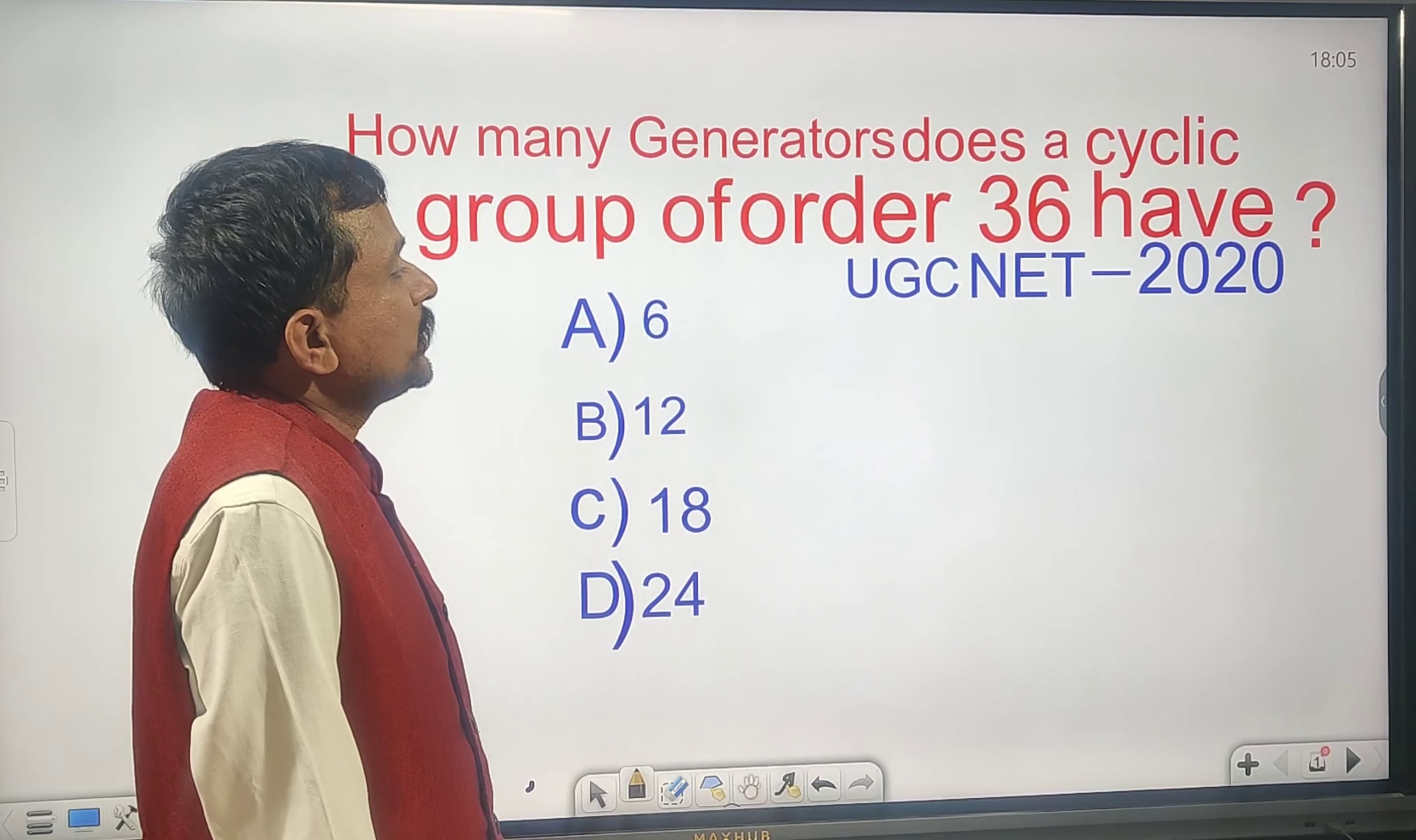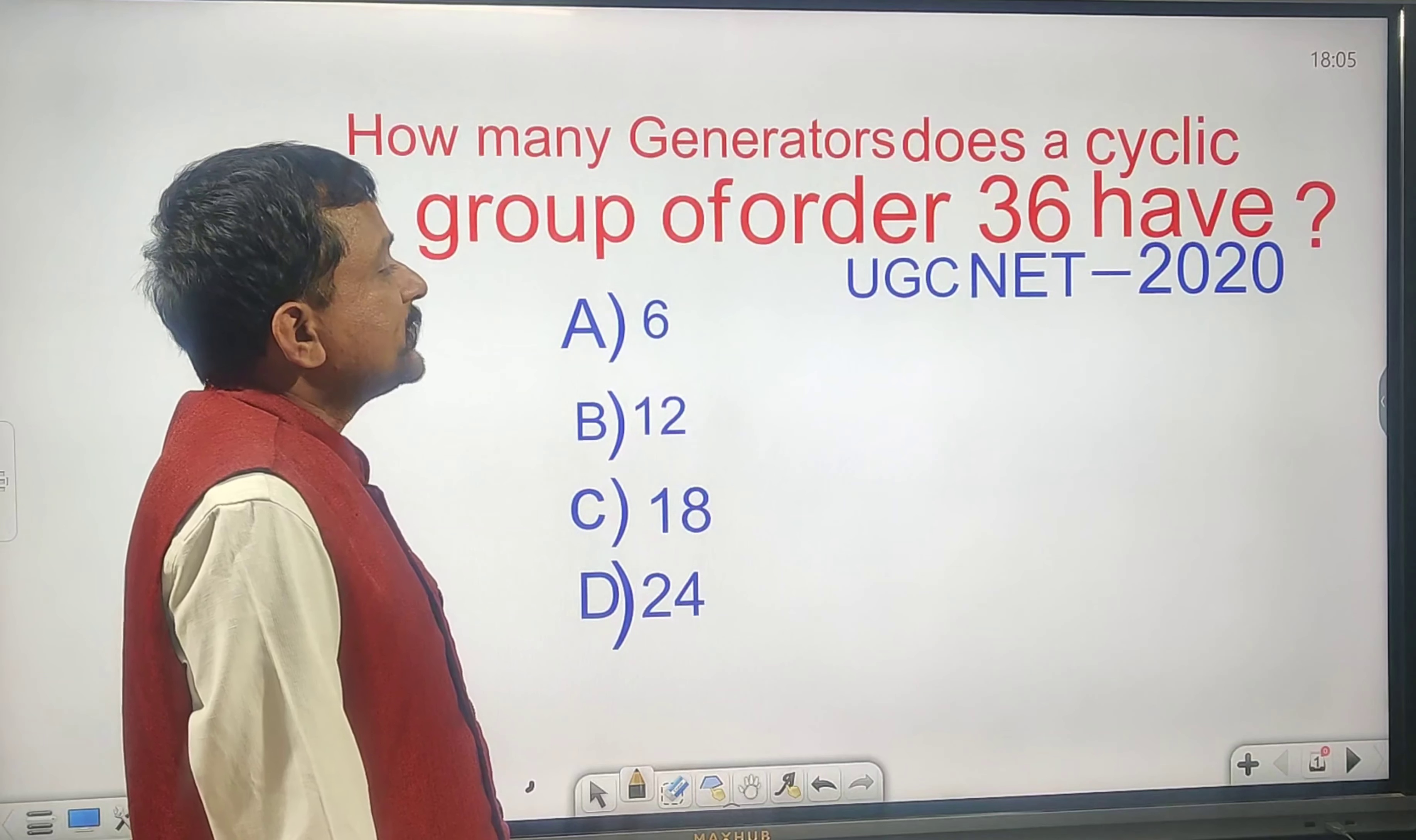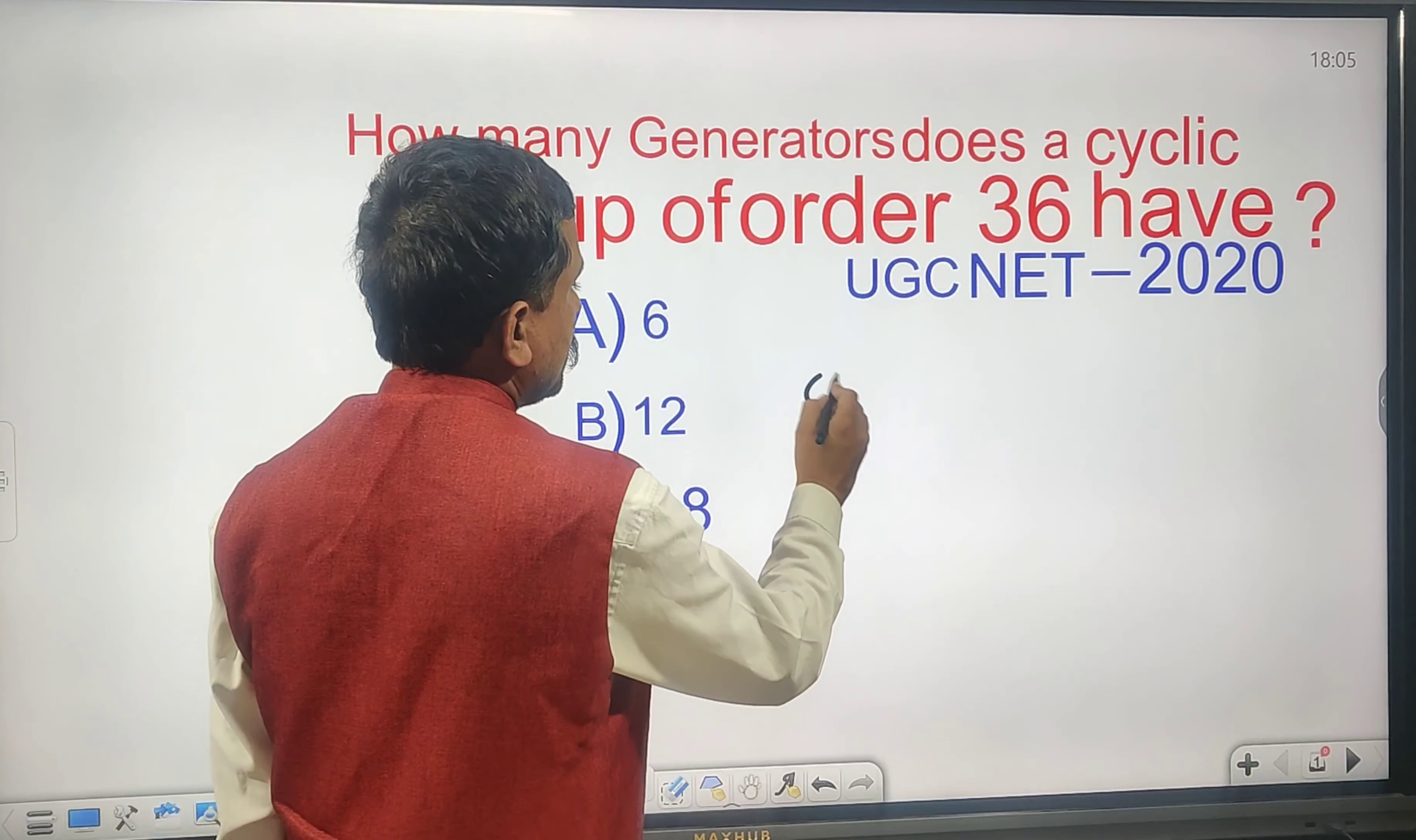Next question, UGC NET 2020: How many generators does a cyclic group of order 36 have? We'll use φ(n) to solve this.